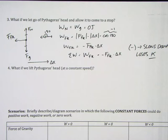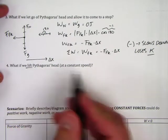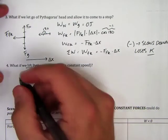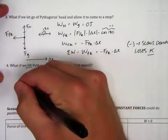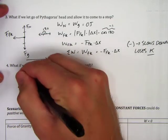All right, in this final example, we're going to lift Pythagoras' head now at a constant speed with a tensional force. So we have tension pulling upward,